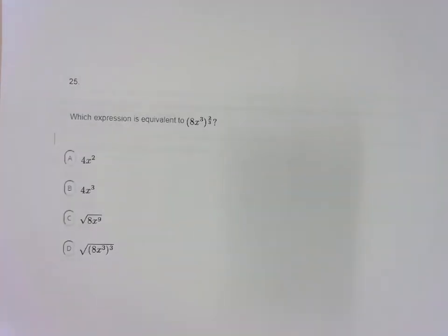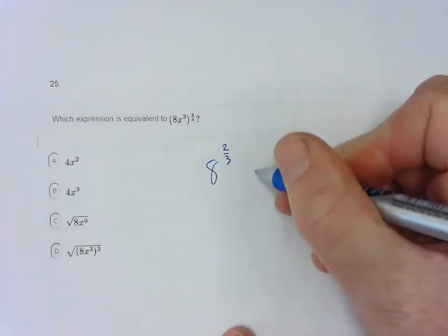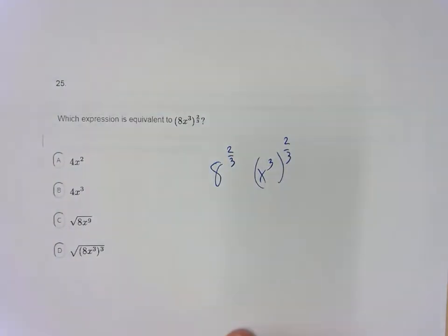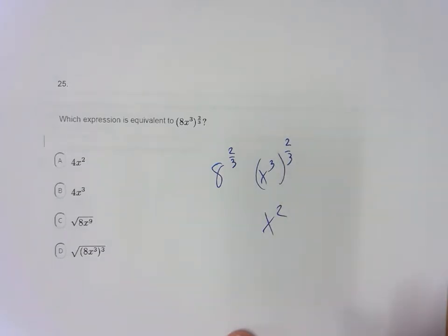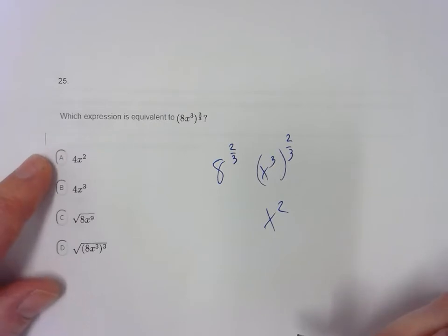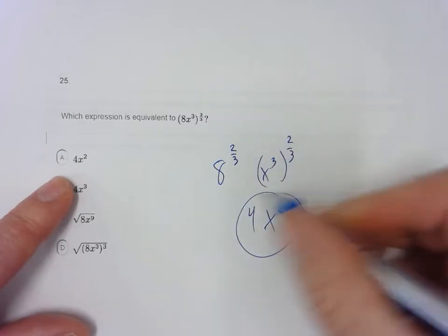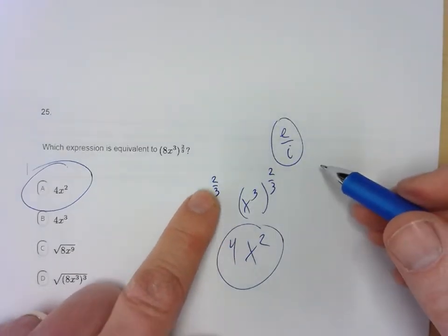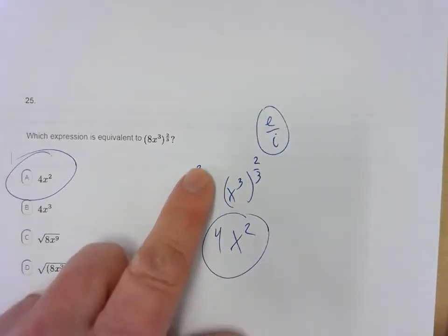Question 25: Remember the mnemonic — the top number is the exponent, and the bottom number is the index. Think of it as 8 to the two-thirds times x to the 3rd to the two-thirds. When you raise an exponent to an exponent, multiply: two-thirds times 3 equals 2, so you get x squared. Then take the cube root of 8, which is 2, and square it to get 4. So the answer is 4x squared.